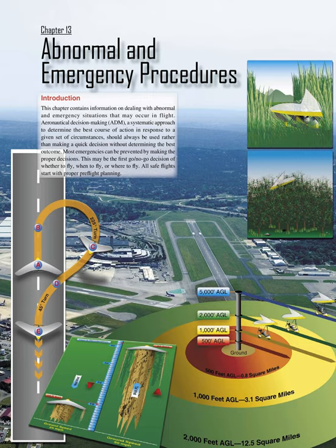Chapter 13: Abnormal and Emergency Procedures. This chapter contains information on dealing with abnormal and emergency situations that may occur in flight. Aeronautical Decision Making (ADM), a systematic approach to determine the best course of action in response to a given set of circumstances, should always be used rather than making a quick decision without determining the best outcome. Most emergencies can be prevented by making the proper decisions.